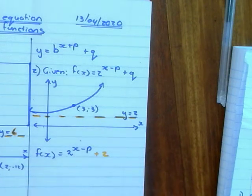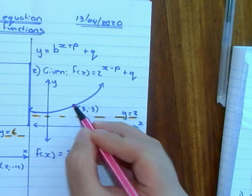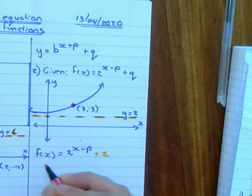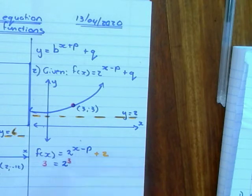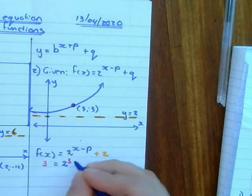Then I substitute in the point that is given. Point is 3, 3. So y is 3 equals 2 to the power of x. And my x is also 3 minus b plus 2.